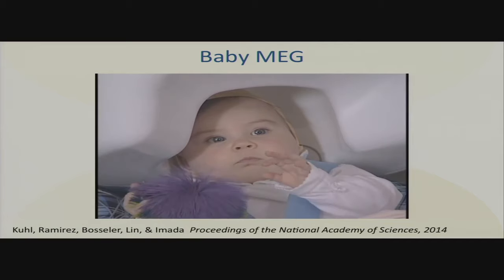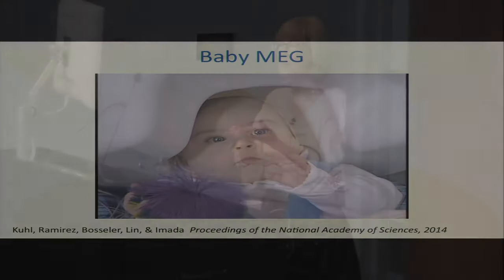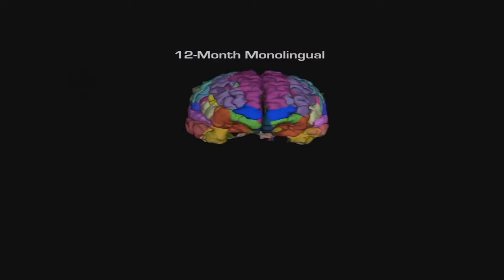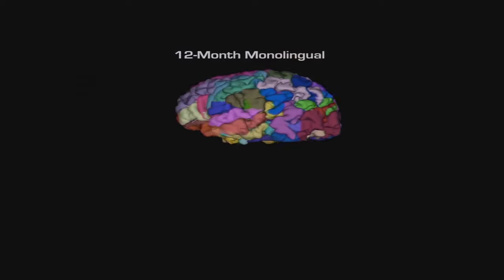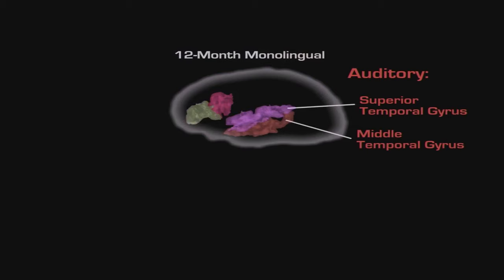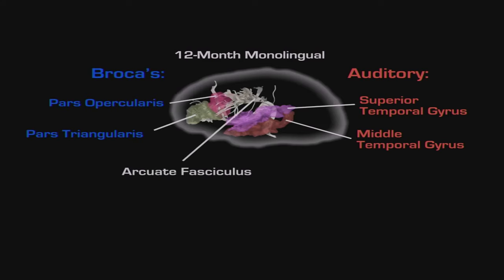We're very interested in the sensory-motor connections, because babies at this time are not only building the architecture for perception, but building an architecture that allows them to imitate and reproduce. The question is: how in the world do babies imitate at the age of 10 months? When you present a new word to them and they're able to mimic it, it's not trial and error. The brain imaging helped. Here we see a 12-monther showing about 150 areas. We're doing an ROI-type analysis with auditory cortex, very interested in Broca's area because it handles motor planning, with the arcuate connecting them.